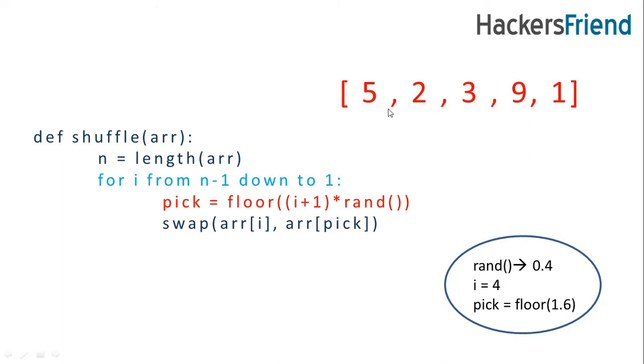How it will be sure that only elements from this much portion will be selected? Because when we multiply the value given from random function with i, then it will always be smaller than i. So our selected value or the value of pick will always be smaller than the value of i.